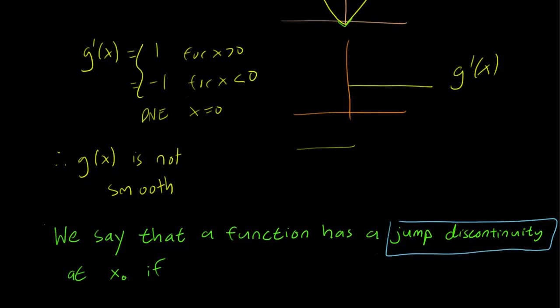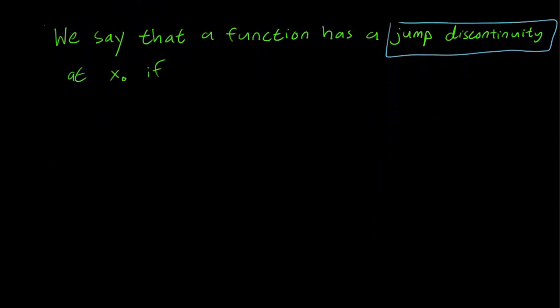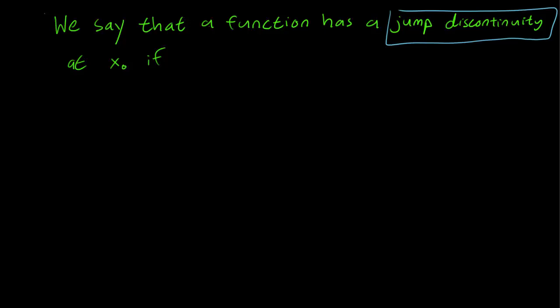Next, we'll have to introduce the meaning of the term jump discontinuity. We say that a function has a jump discontinuity at x0 if the limit of fx as x approaches x0 from the negative direction and the limit from the positive direction do not agree.